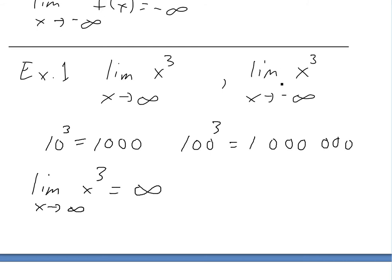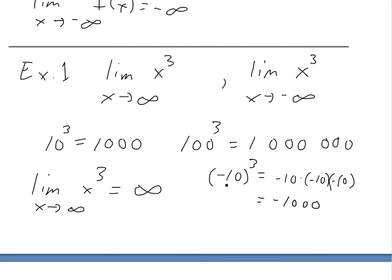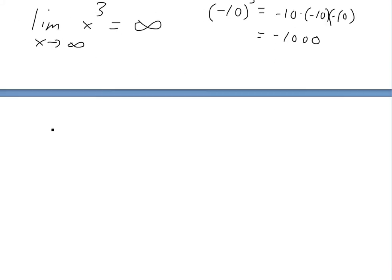Similarly, for the limit as x approaches negative infinity of x³: if you put any negative number into a cube, say negative 10 cubed, you get negative 10 times negative 10 times negative 10. With three negatives, two cancel to give positive, but the third makes it negative again, so you get negative 1000. As you put in really large negative numbers, you just go more and more negative. So the limit as x approaches negative infinity of x³ equals negative infinity.